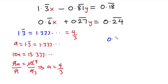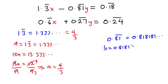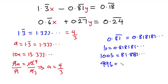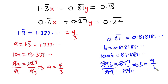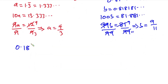Now let's focus on 0.8̄1̄. This is the same as 0.818181... Let b = 0.818181... Multiplying by 100 gives 100b = 81.8181... Subtracting the first equation from the second gives 99b = 81. Dividing each side by 99, b = 81/99 = 9/11.